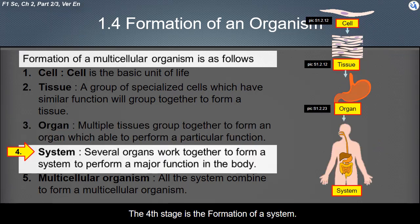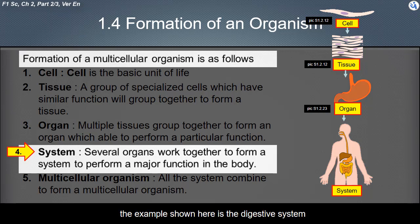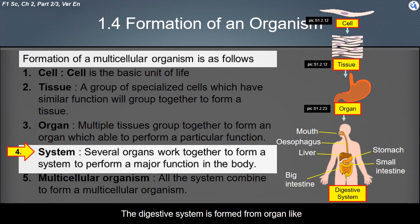The fourth stage is the formation of a system, where several organs work together to form a system to perform a major function in the body. The example shown here is the digestive system. The digestive system is formed from organs like the mouth, esophagus, liver, stomach, small intestine, and big intestine.